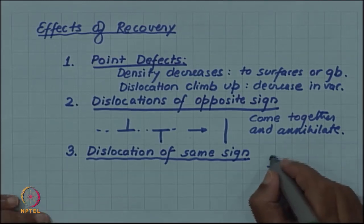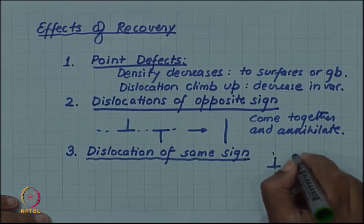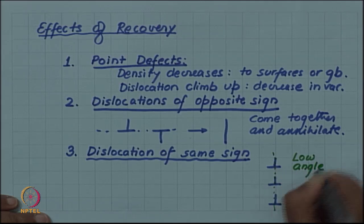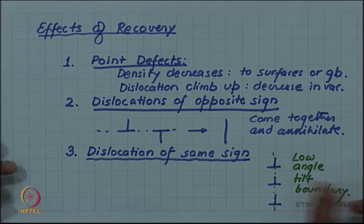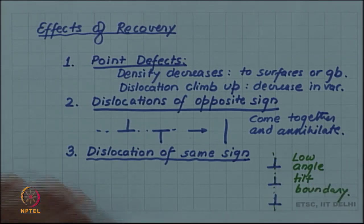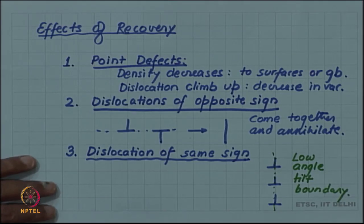And you know that under this situation we have what is called a low angle tilt boundary. Similar process we have not discussed in this course with a screw dislocation. If screw dislocations come together they form a grid of dislocation which gives us low angle twist boundary.